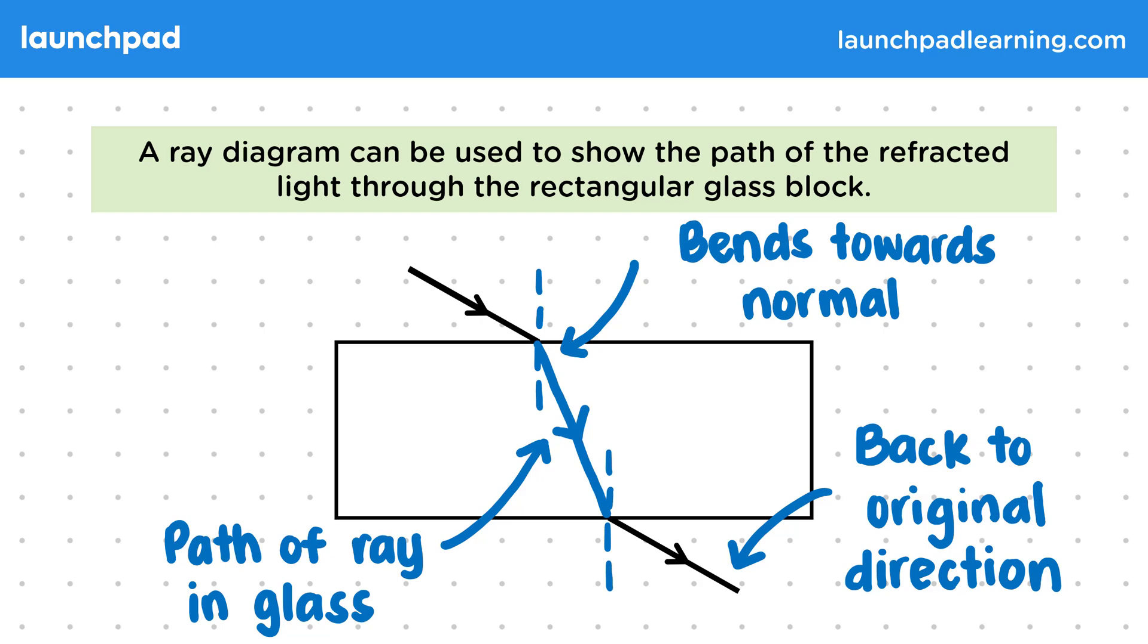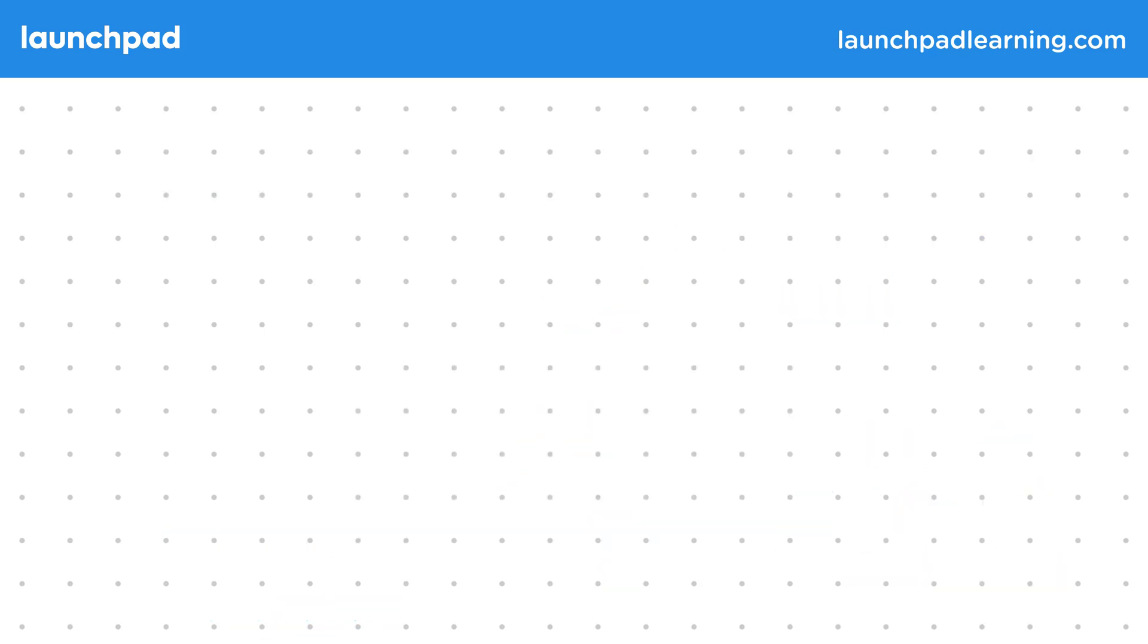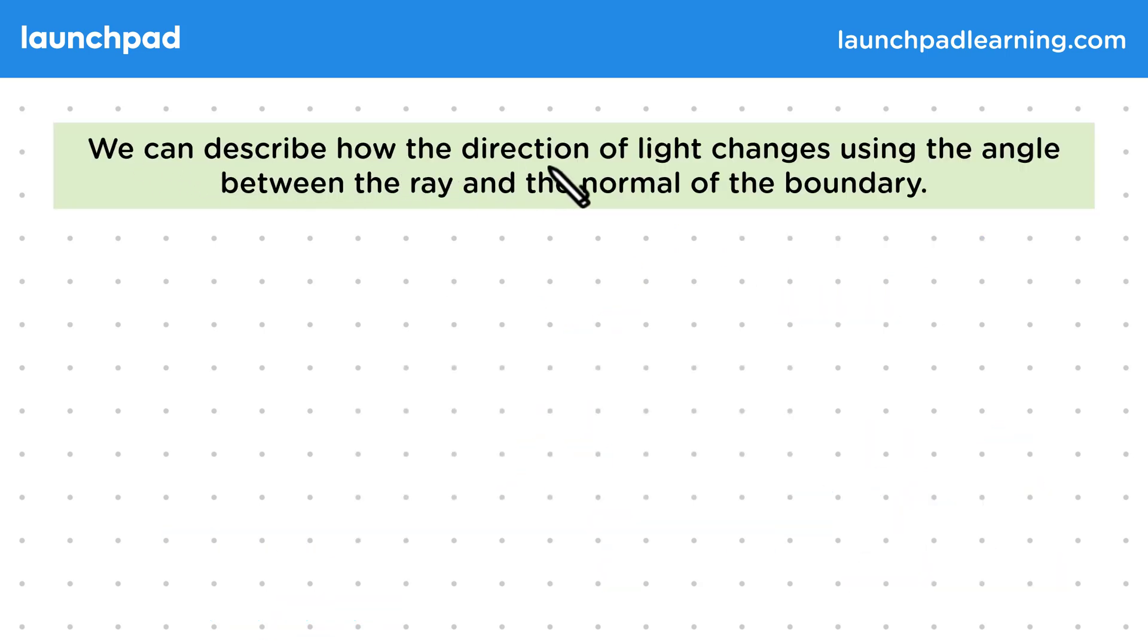But what's the best way of describing these directions that the ray travels in? Well, we can describe how the direction of light changes using the angle between the ray and the normal of the boundary.